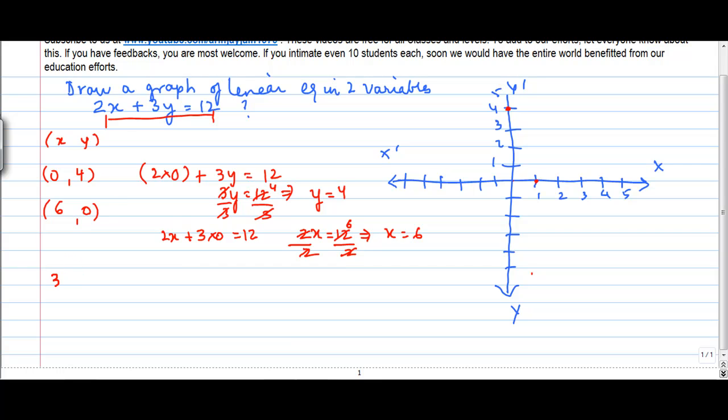Let's take x is equal to 3. So you get 2 into 3 plus 3y is equal to 12. 3y plus 6 is equal to 12 or 3y is equal to 12 minus 6. Moving 6 to the other side changing the sign. So 3y is equal to 6. If you divide both the sides by 3, y is equal to 2.